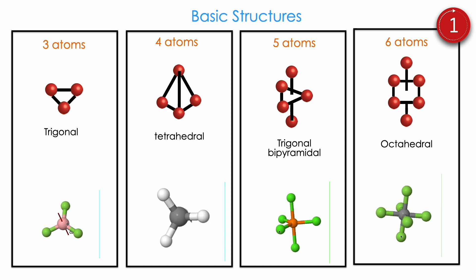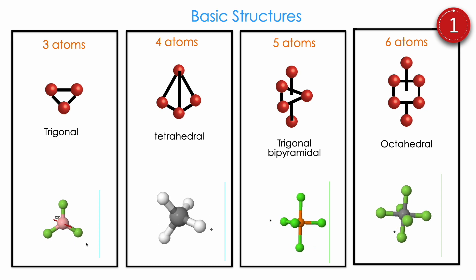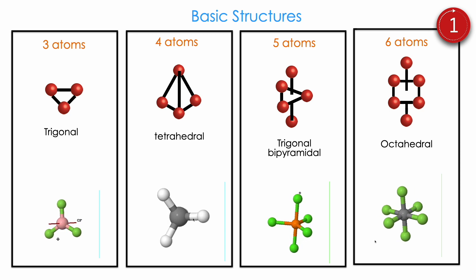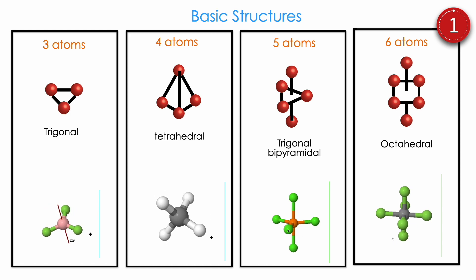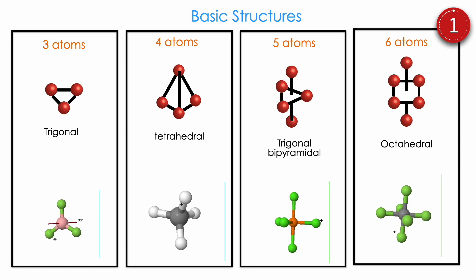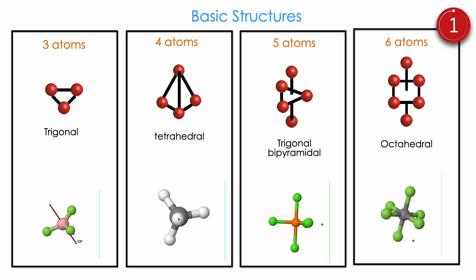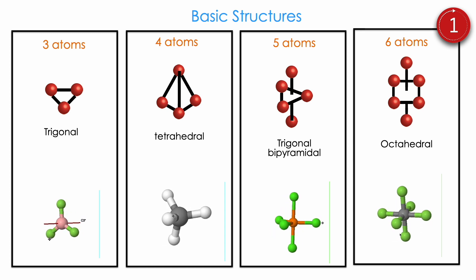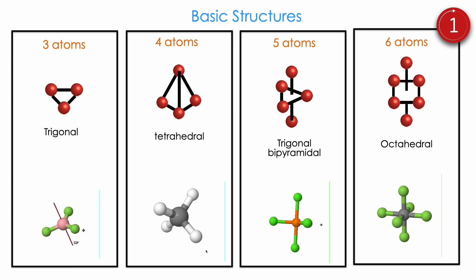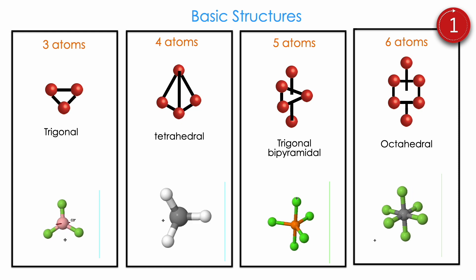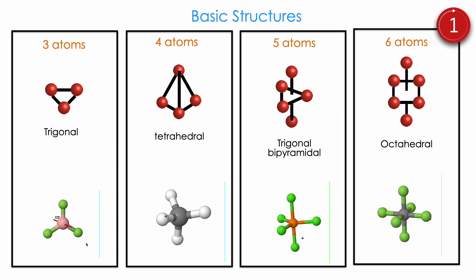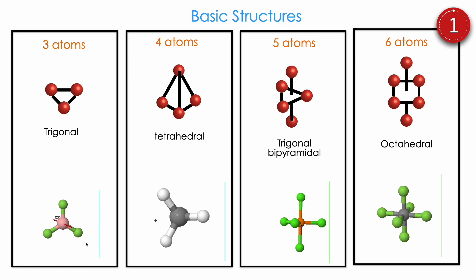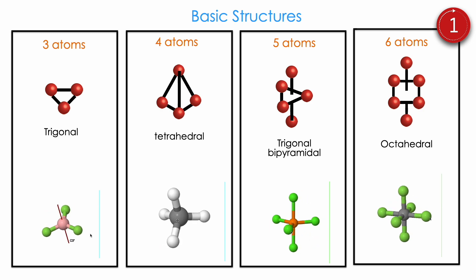Let us see all the arrangements in 3D. Trigonal planar is easy to imagine — three atoms in the plane, one central atom holds the three terminal atoms. That central atom is called the central metal atom, and everywhere the central atom comes it holds the terminal atoms. Four atoms means tetrahedral — central atom in the middle with four atoms on the corners. Trigonal bipyramidal: three atoms on the plane, one atom above, one atom below — that is our five-atom arrangement. Six atoms in octahedral: four on the plane, one above, one below.